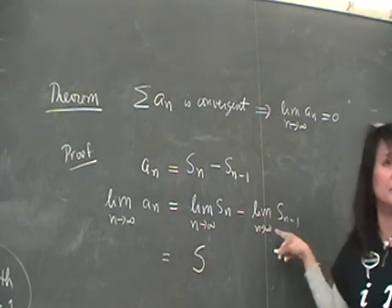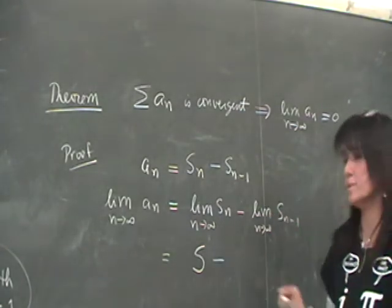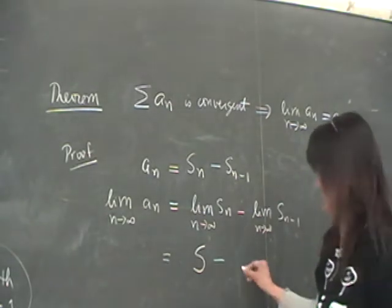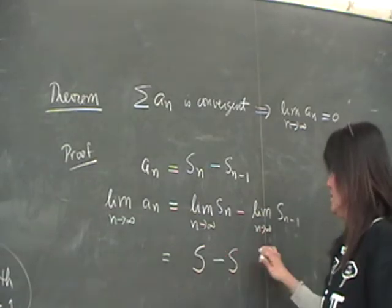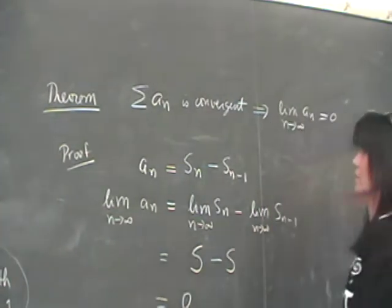Likewise, I mean this is arbitrary N, right? So the limit of S of N minus 1 as N approaches infinity is also S. We don't know where N is. So the limit is S, the limit is S, S minus S is 0.